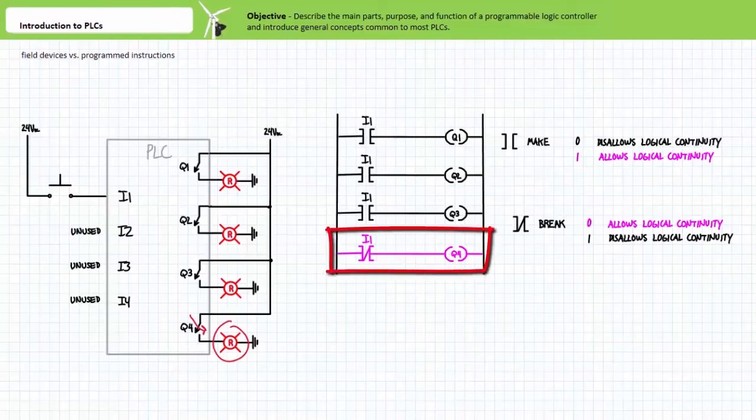Consider a normally open field input switch on input 1 logically instantiated three times using a make instruction and a fourth using the break instruction. The break instruction, essentially the opposite of the make instruction, allows logical continuity anytime the field input sends a logical 0 to input 1 and disallows logical continuity anytime the field input device sends a logical 1 to input 1.